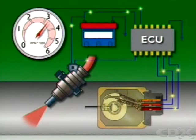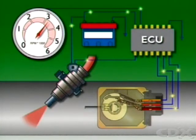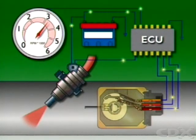The idle contacts closed signal can also be used, with the engine RPM signal to the control unit, to stop fuel delivery on engine overrun. This can be done, for example, if engine speed is above 2500 RPM on deceleration.